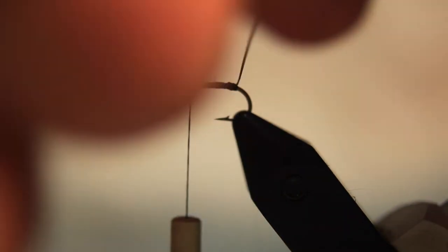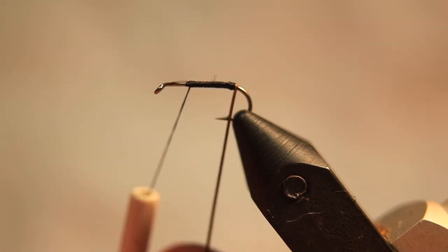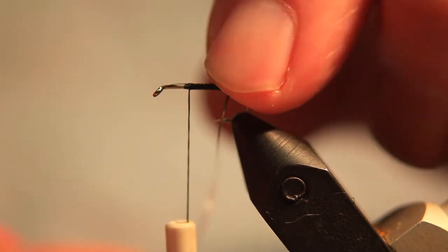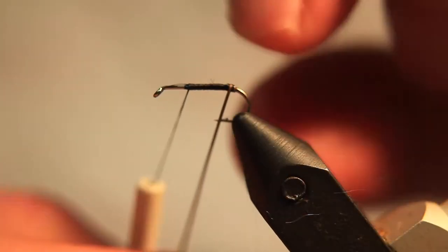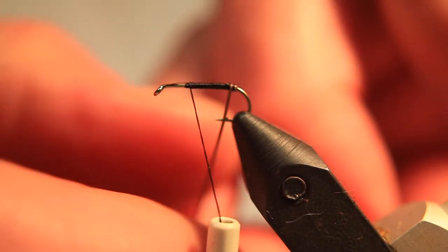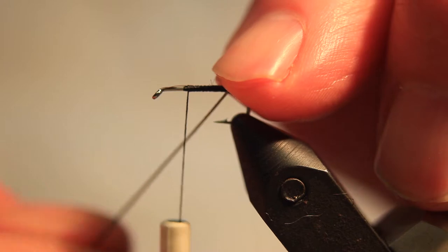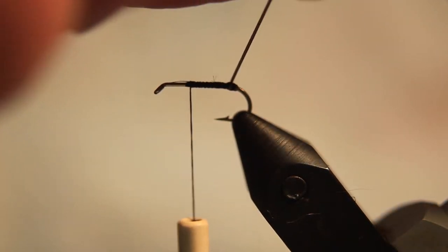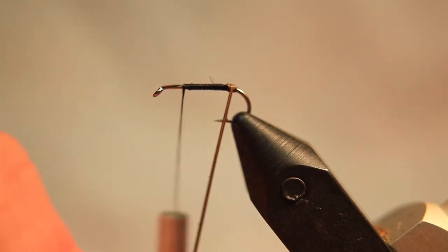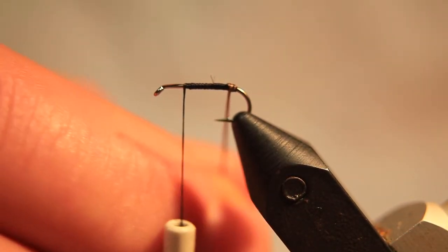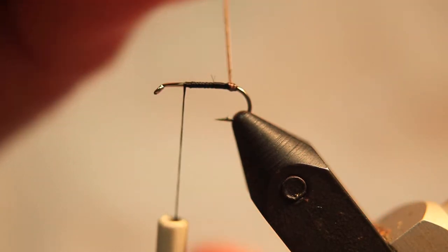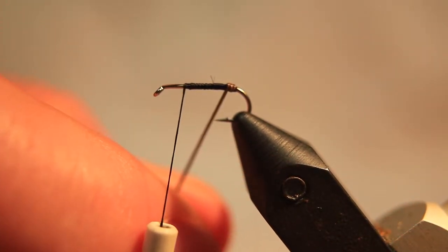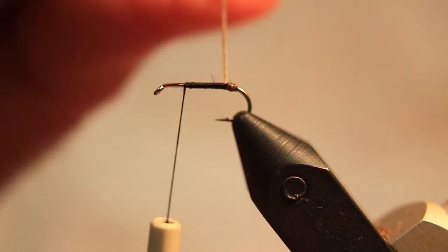And now we'll wind the peacock herl stem back towards the two-third position. This can be very fiddly, and not only fiddly, but it can also break the actual stem easily. So you need to take it nice and gentle as you wind it back.